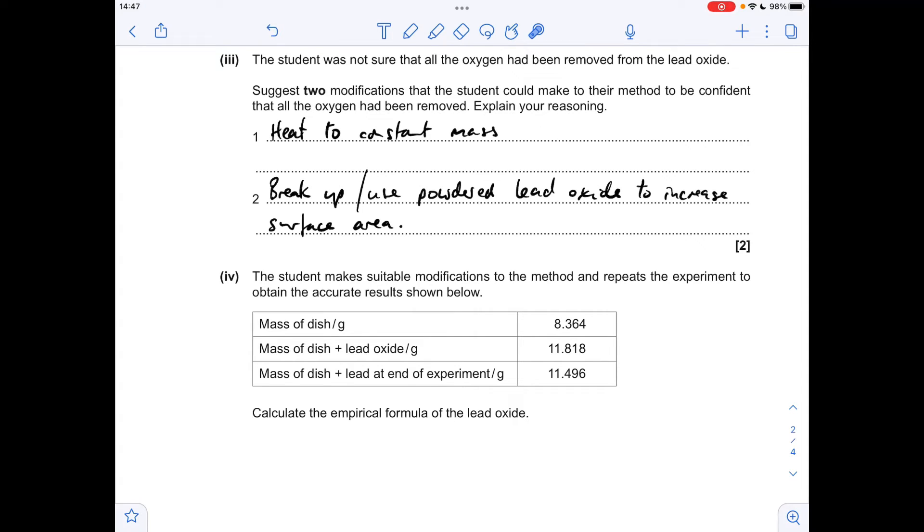So there's two, so that would get us the marks, but another couple you could use - you could talk about using excess methane to make sure that all of the lead oxide reacts. And the fourth one you could give is down to the fact that if all the oxygen's been removed from the lead oxide, you're going to generate carbon dioxide. So if you bubble the gas produced through lime water and it goes cloudy, you've got carbon dioxide made, and therefore the lead oxide's been fully reduced.